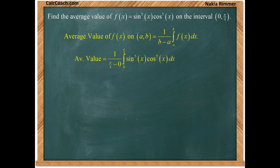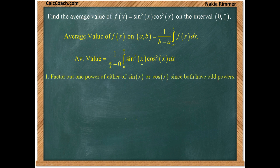What we recognize is that we have an odd power on sine, but we also have an odd power on cosine. When that's the case, you pick either one and factor out one power of one of them. I'm going to choose to factor out one power of cosine.